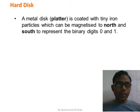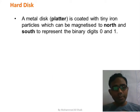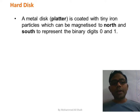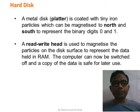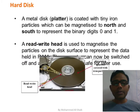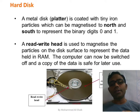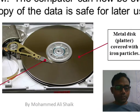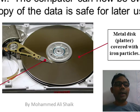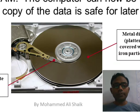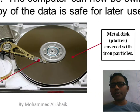The hard disk is a metal disk consisting of platters (plates) coated with tiny iron particles that can be magnetized to north or south to represent binary digits — zeros and ones. A read/write head magnetizes the particles on the disk surface to represent data held in RAM. The round disk-like platters are made of ceramic glass where data is actually stored.